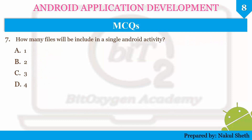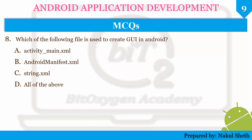Next question: how many files will be included in a single Android activity? The options are one, two, three, and four. The correct answer is two — the first file is activity_main.xml and the second file is MainActivity.java. Next question: which of the following file is used to create a GUI in Android? The answer is activity_main.xml.